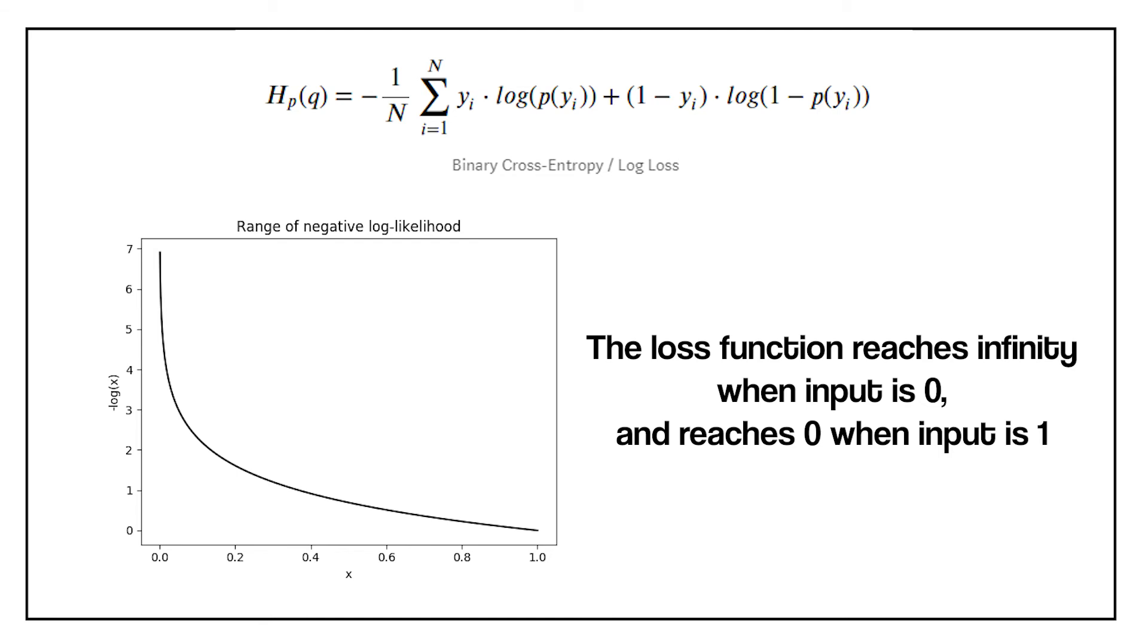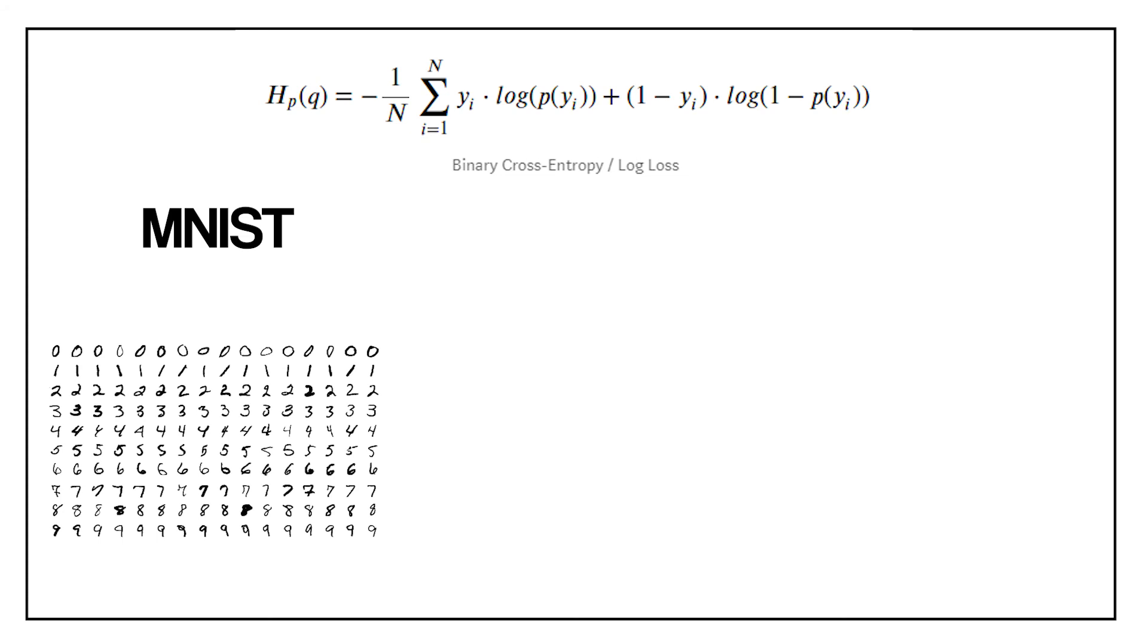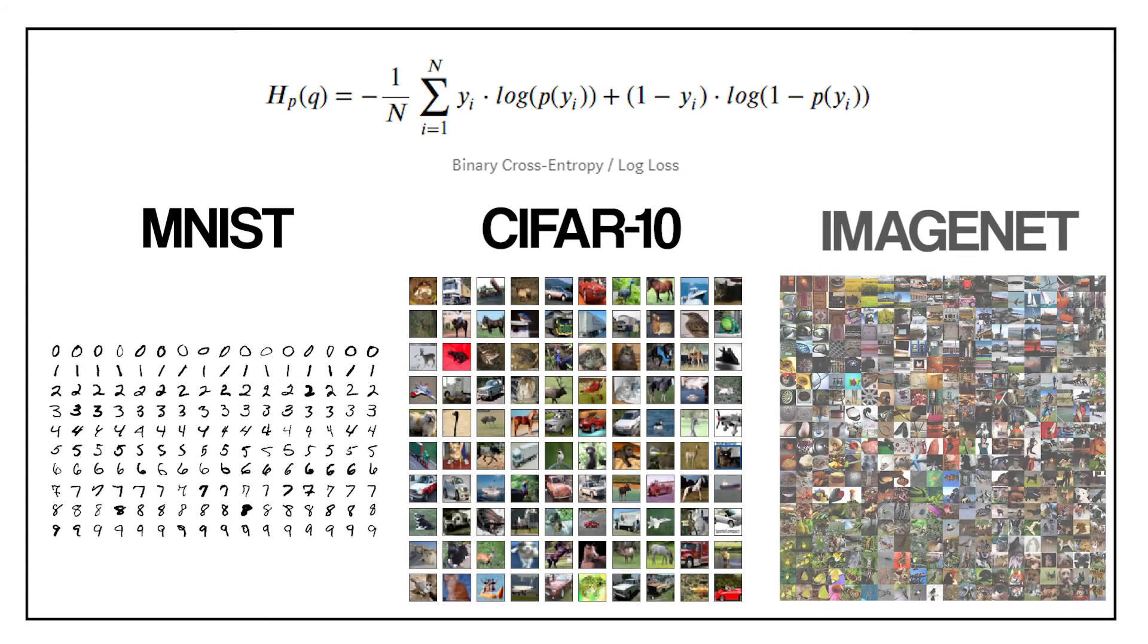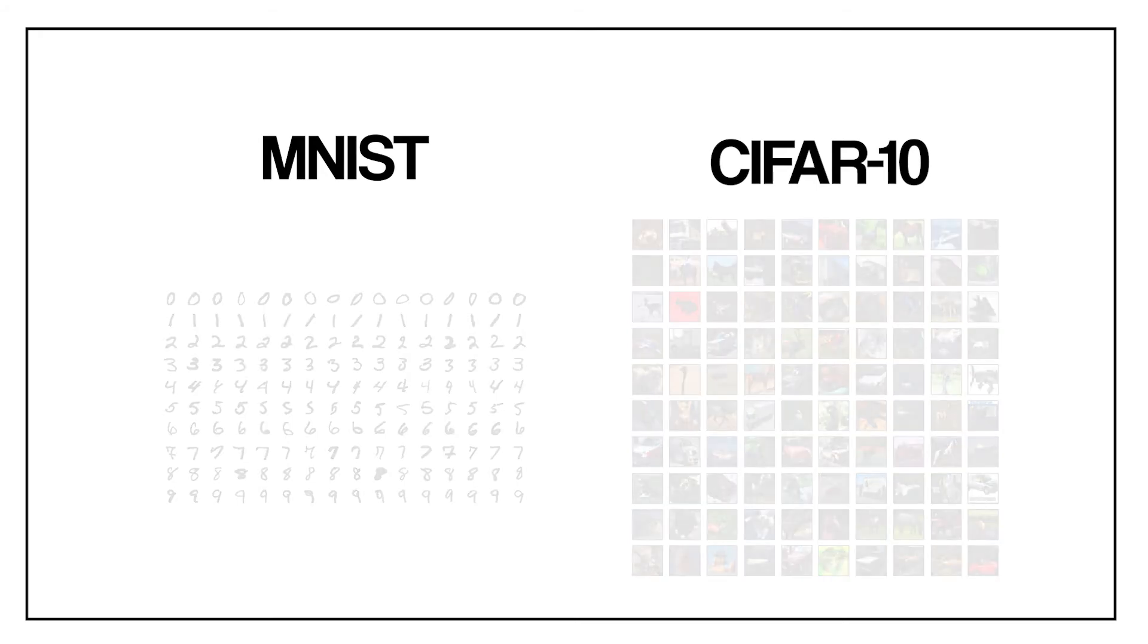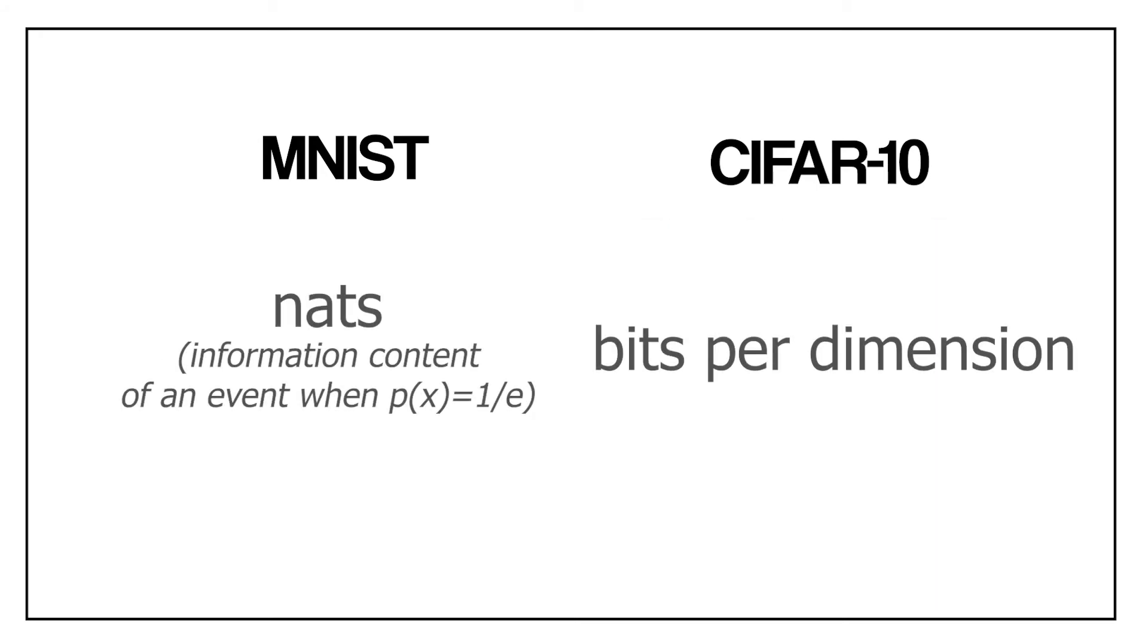Log loss increases as the predicted probability diverges from the actual label. We will be using three different datasets: MNIST, CIFAR-10, and ImageNet. Here we will focus on the first two, the last one lacking comparison with other techniques. The scores will be reported in nats for MNIST and bits per dimension for CIFAR-10.